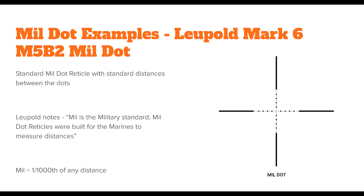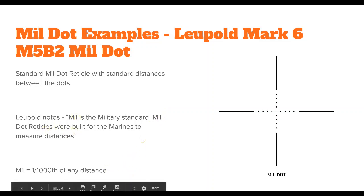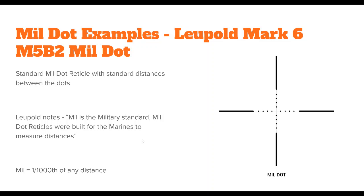The next example is the Leupold Mark 6 M5 B2 mil-dot — a standard mil-dot scope with the subtensions we discussed. The dots are 0.2 mil in diameter; from the top of one dot to the bottom of the next is 0.8 mil; from one point on one dot to the same exact point on the other is one mil exactly. Mil tends to be the military standard, which is why we use mil on mil-dot instead of MOA. Originally, mil-dot reticles were built for the Marines to measure distances — that's actually where the innovation came from.